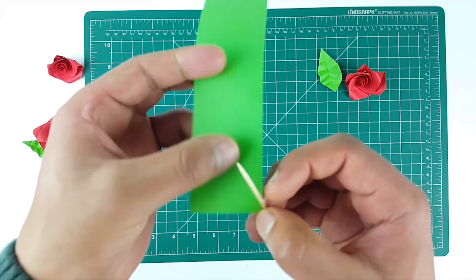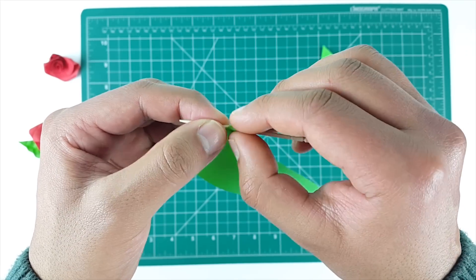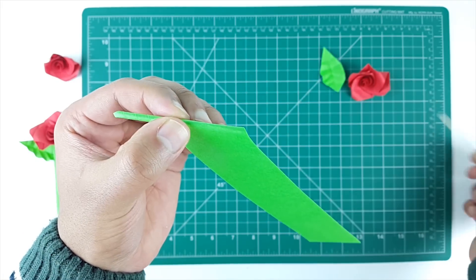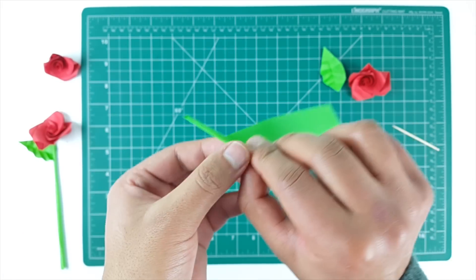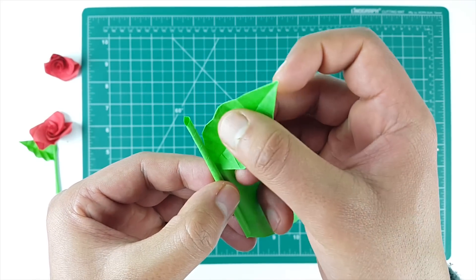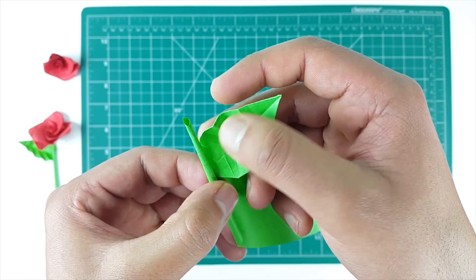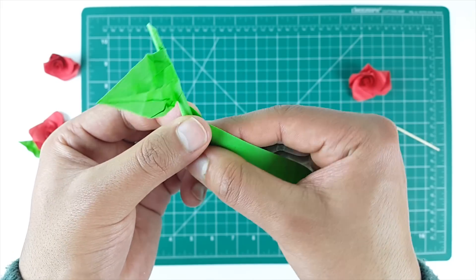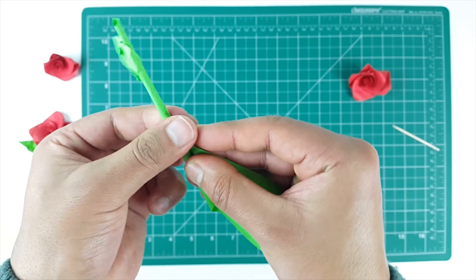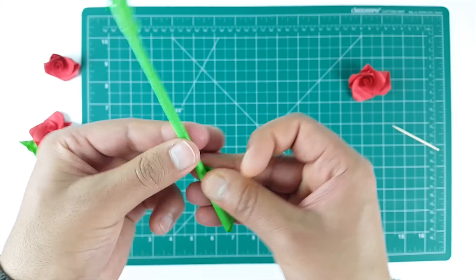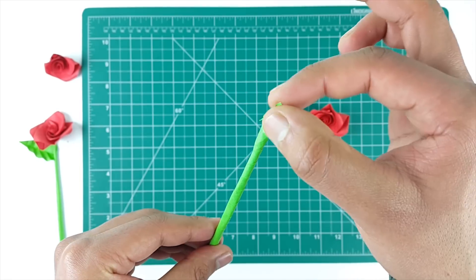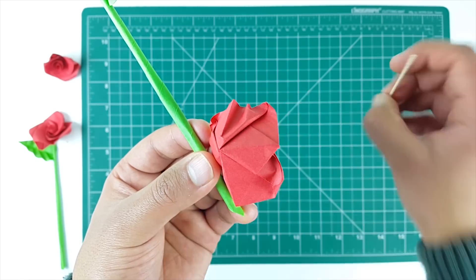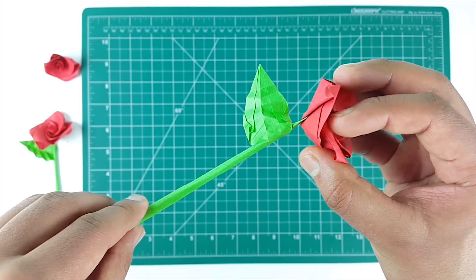Now we will make the stem. For that, take a toothpick and start rolling the paper. After a few circles, remove the toothpick. Pick the leaf and insert it in the stem. Keep rolling till the stem is complete. Insert the stem in the back of the rose and our first flower is ready.